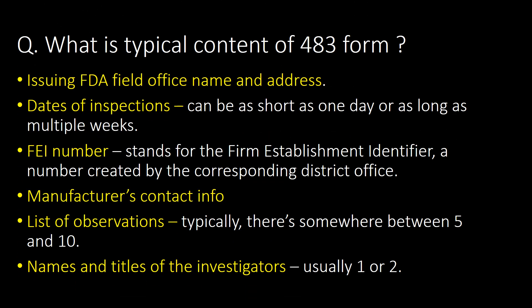What is the typical content of a Form 483? A Form 483 typically contains the issuing FDA field office name and address, dates of inspection, FDA number, manufacturer's contact info, list of observations, and names and titles of the investigators.